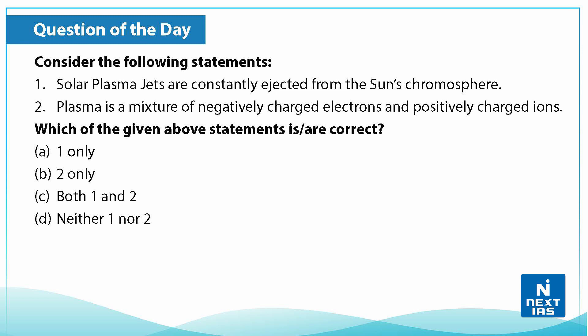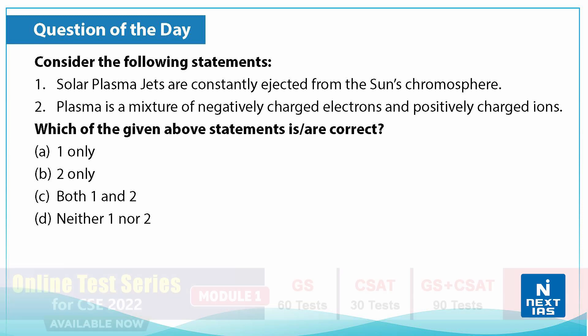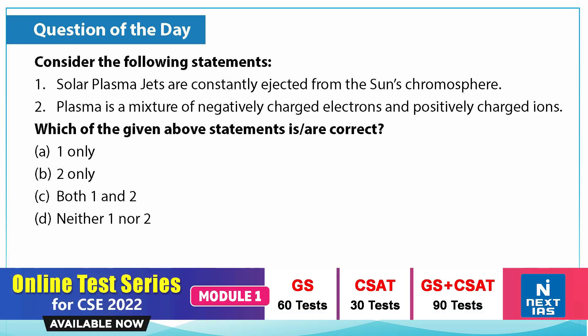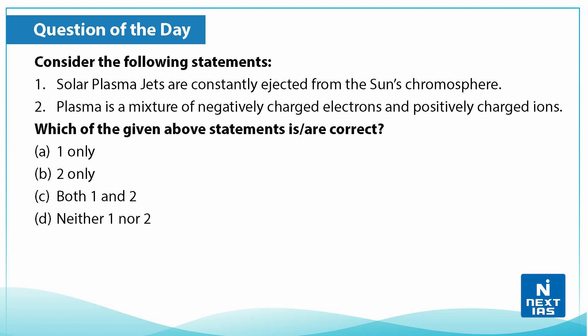Consider the following statements: First, solar plasma jets are constantly ejected from the sun's chromosphere. Second, plasma is a mixture of negatively charged electrons and positively charged ions. Which of the above statements is correct? You can write your answers in the comment section below. The correct answer is C — that is, both statement one and statement two are correct.